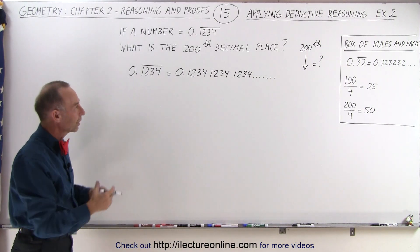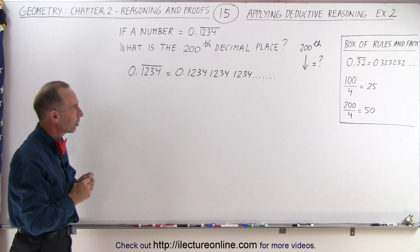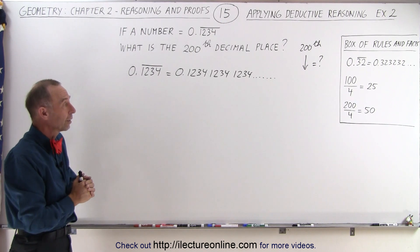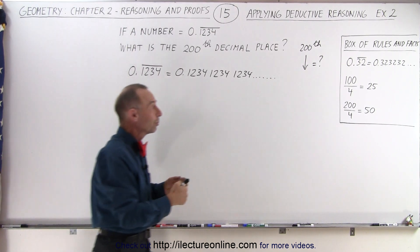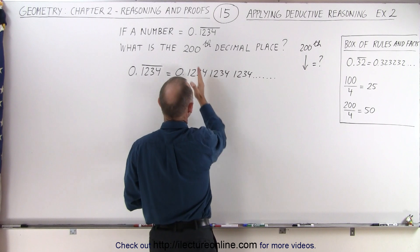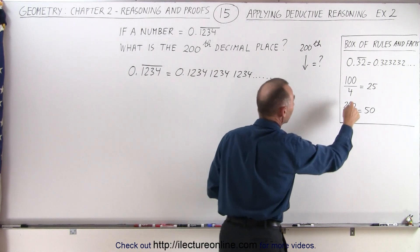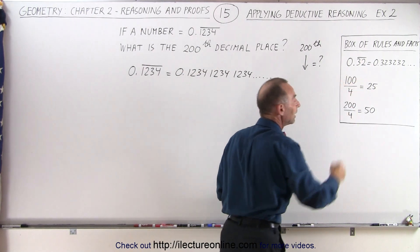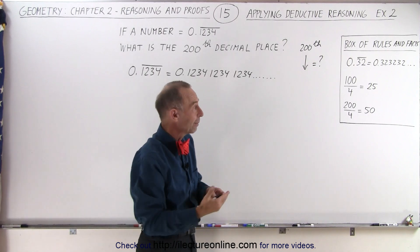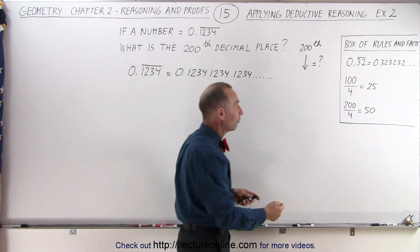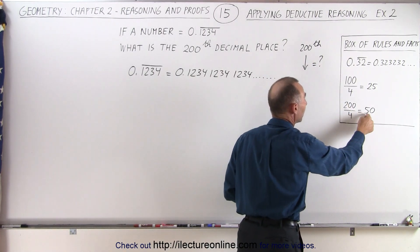What else do we need to know so we can come to a good solid logical conclusion that is correct? We need to realize that the number 4, since there's 4 decimal places that keep repeating all the time, that the number 4 divides evenly into 100. 100 divided by 4 is 25 and therefore 200 divided by 4 is 50.